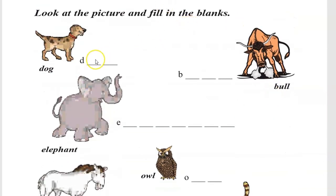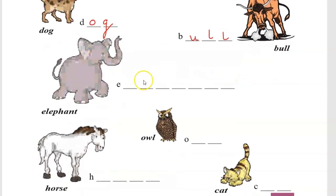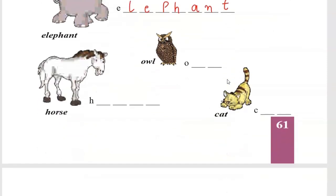Now look at the picture and fill in the blanks. Dog bana hai. D-O-G, Dog. Bull. B-U-L-L, Bull. Elephant. E-L-E-P-H-A-N-T, Elephant. Owl. O-W-L. Horse. H-O-R-S-E, Horse.